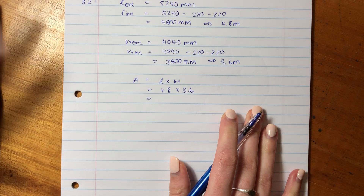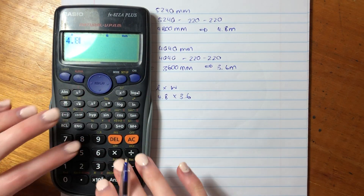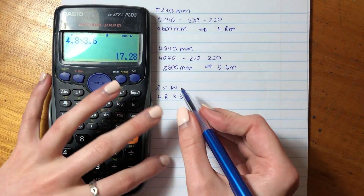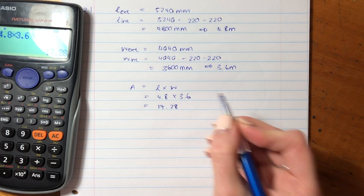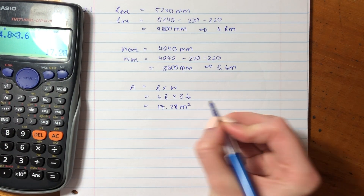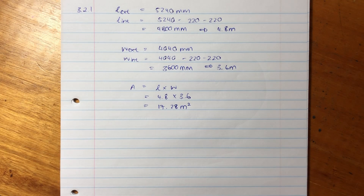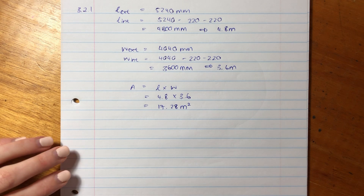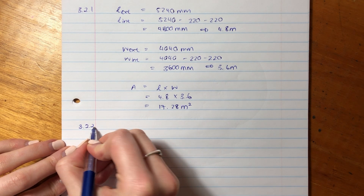Let's see what that is. The area is 17.28 meters squared. If you do not put your units, you will lose marks — do not forget units. It's the worst thing to lose marks over. So that's the first question done.